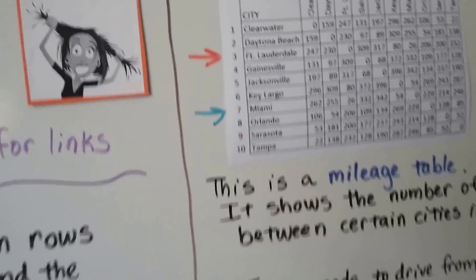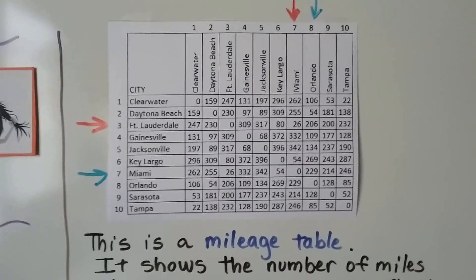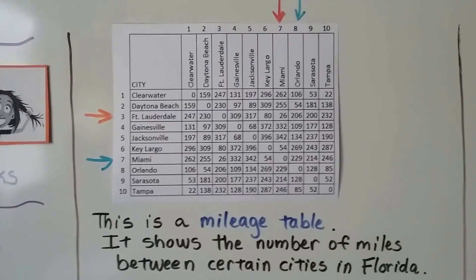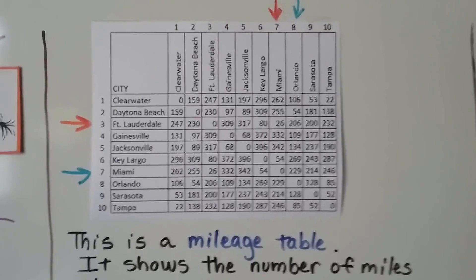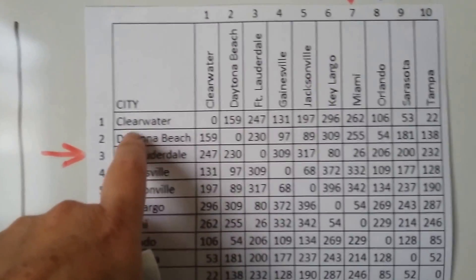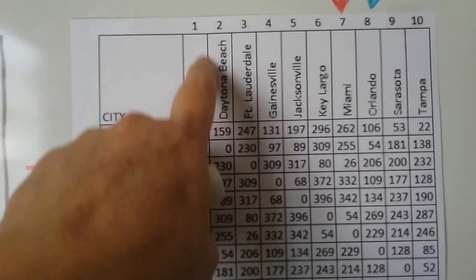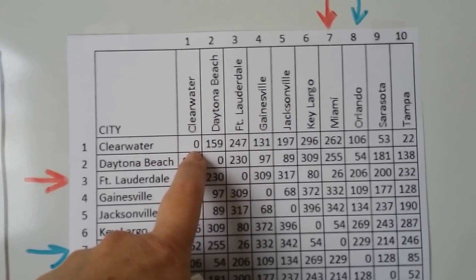Take a look at this one. This is a mileage table. It shows the number of miles between certain cities in Florida. So you can see here, to go from Clearwater to Clearwater, well that's zero. You're already there, aren't you?